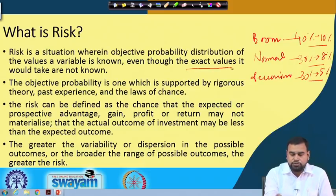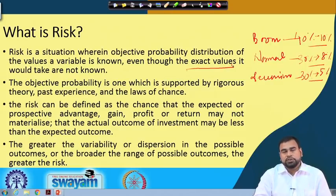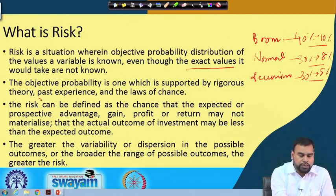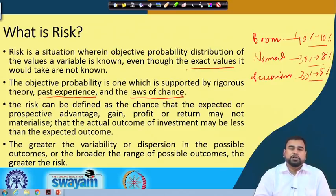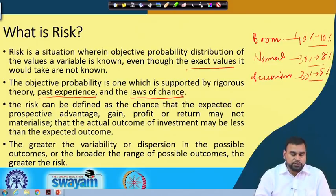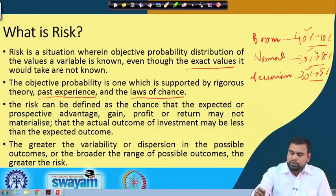The exact values are not known, but we can go for a probability distribution of the particular variable which is our outcome or focused variable. The probability distribution is made on the basis of theory, past experience, and the laws of chance. We have data for that particular variable available for maybe the last 10 or 15 years, and we observe how this data behaved in past periods. Accordingly, we can decide how this particular data is going to behave in the future, and the expected return can be calculated.